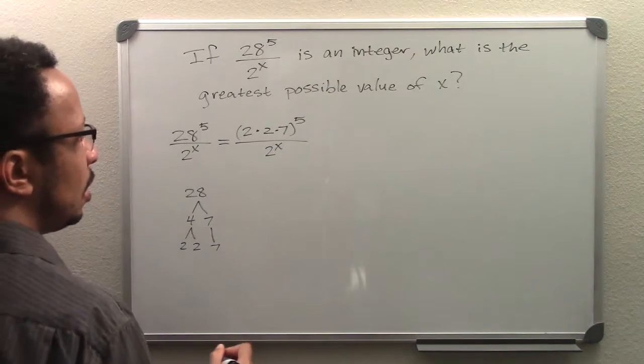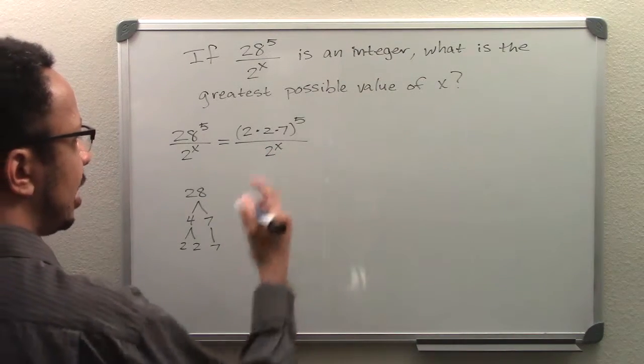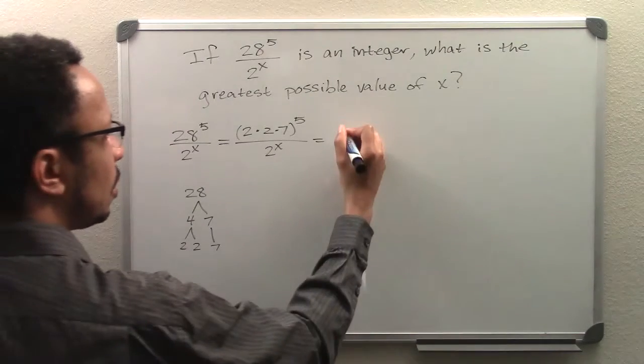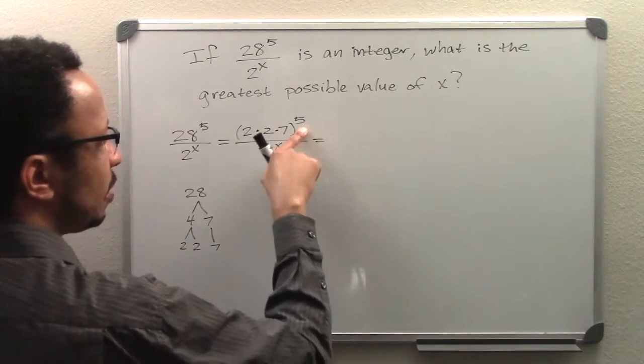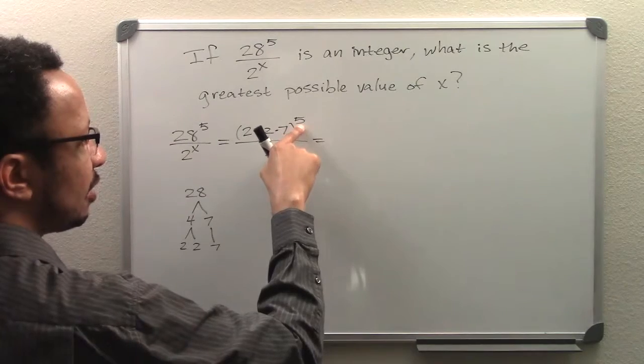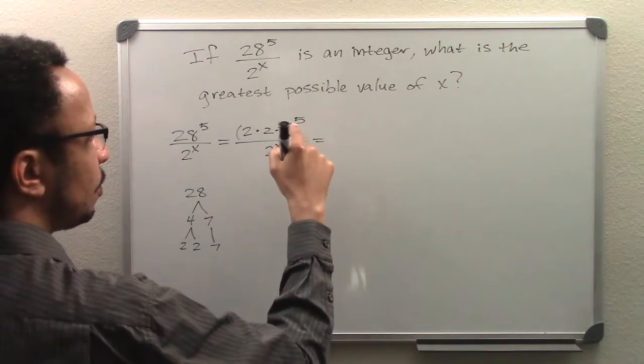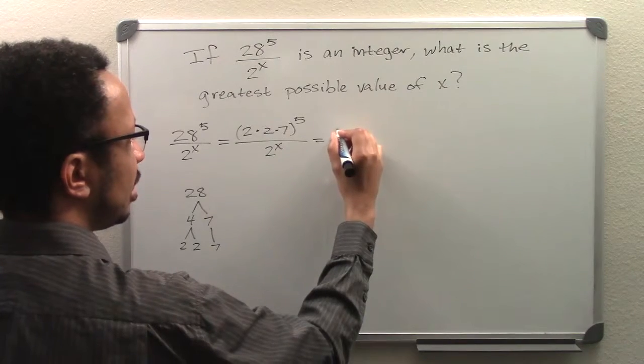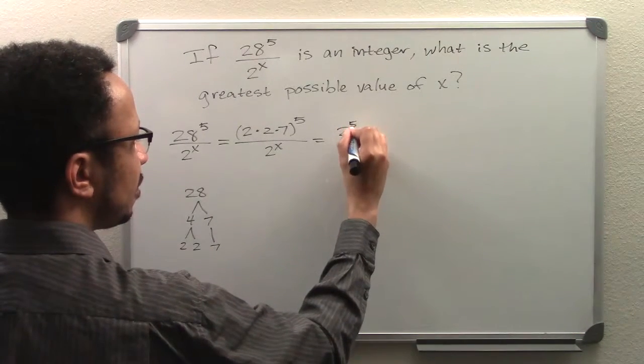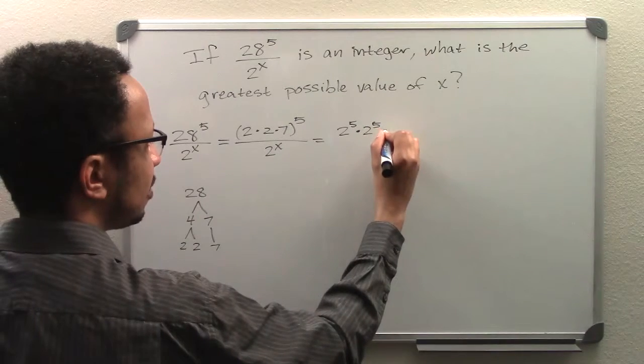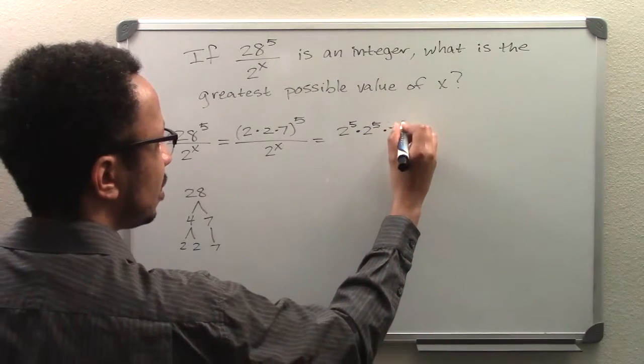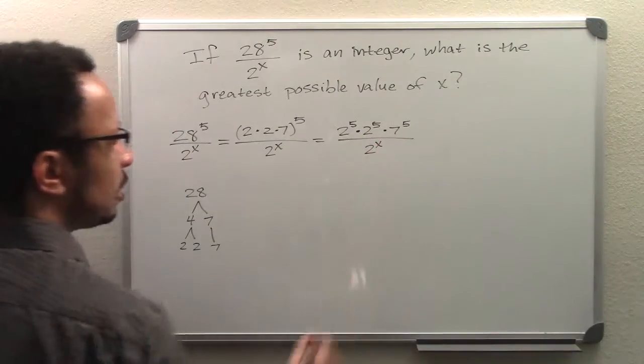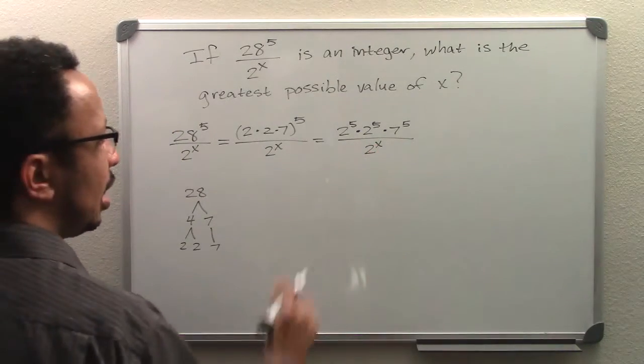Next, what I will do is take notice of the fact that when we have this raised to an exponent here, we apply it inward. Now what we get is 2 to the 5th power times 2 to the 5th power times 7 to the 5th power over 2 to the x power.